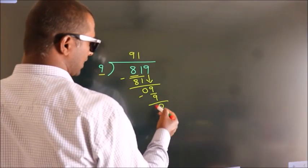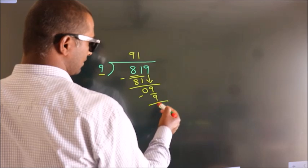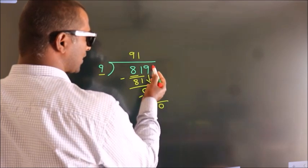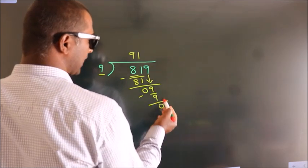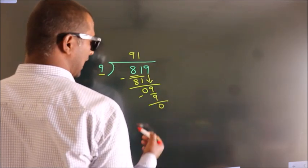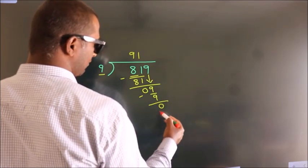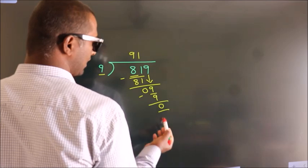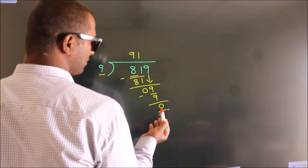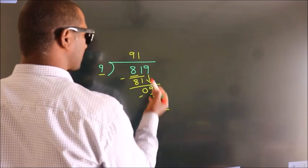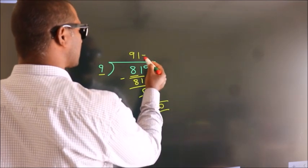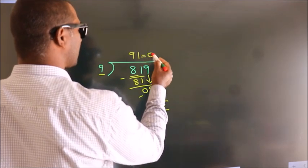After this, there are no more numbers to bring down. We got remainder 0, so this is our quotient.